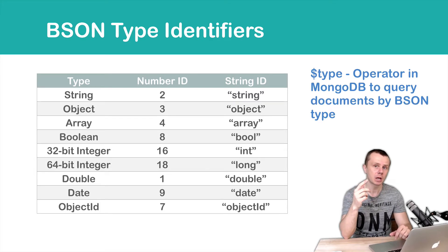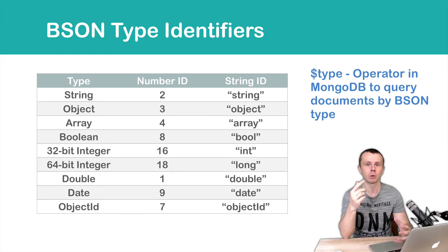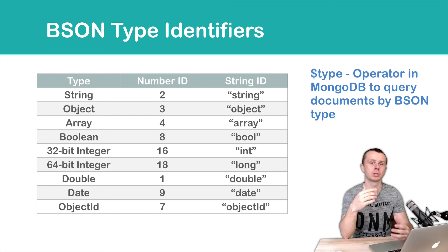In the next section we will talk about Object ID, but before that, let's discuss what the underscore _id field is and what its purpose is.